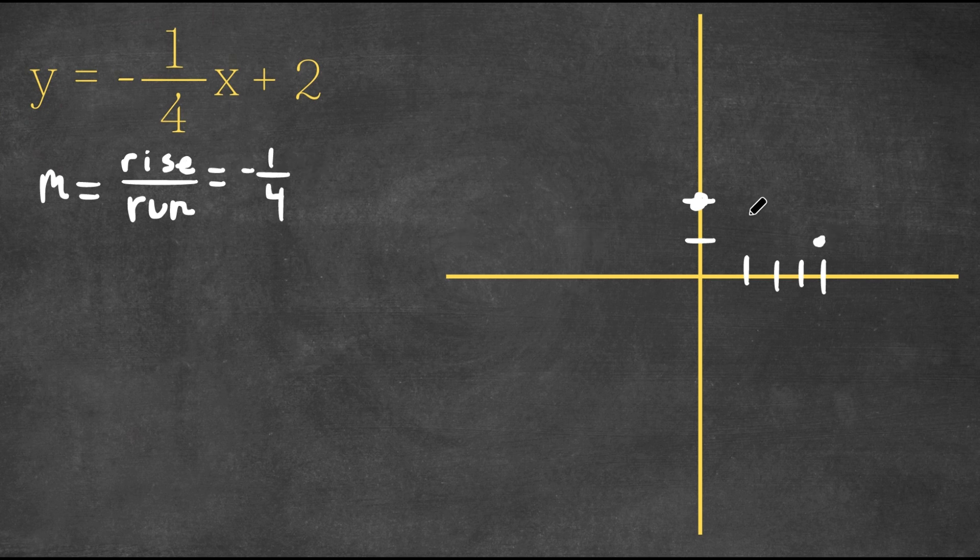Now we're going to do this again. We're going to go down one. So now we're at zero and we're going to go to the right by four. So one, two, three, four. This is where our third point is going to be.